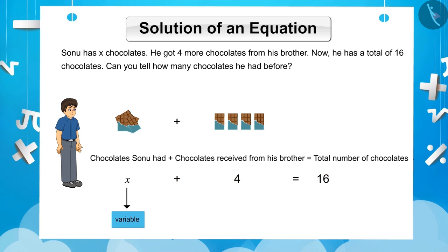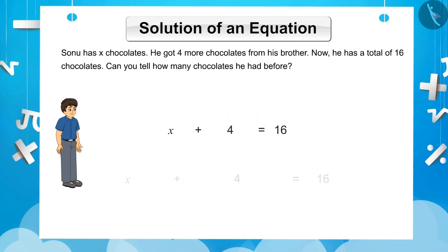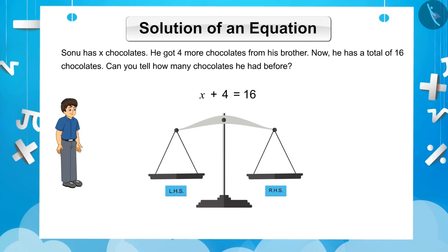Now, we have to find the solution of this equation, that is, we have to find the value of X. We can represent this equation as a hypothetical balance, which is equally divided on both sides. And the beam of the balance is exactly horizontal.